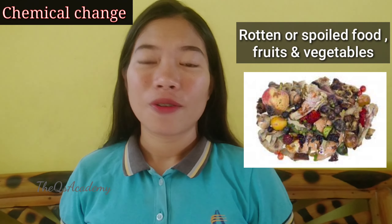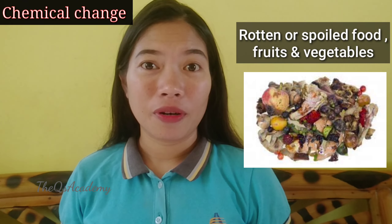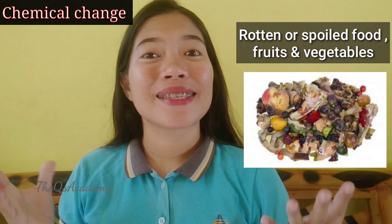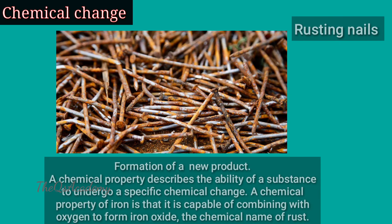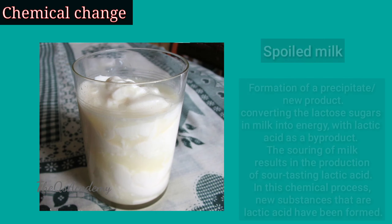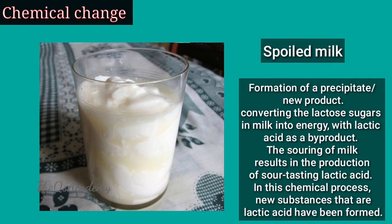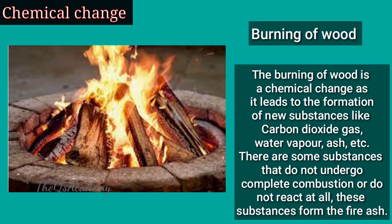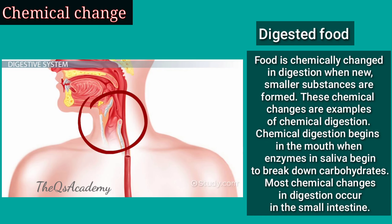Rotten fruits — rotten apple, rotten mango, or rotten vegetables — are examples of chemical change. But slicing an apple or slicing vegetables is an example of physical change. Rusting nails is an example of chemical change. Baking soda mixed with vinegar is an example of chemical change. Spoiled milk is an example too, as well as burning of wood and digested food. And that's the end of our lesson for today.